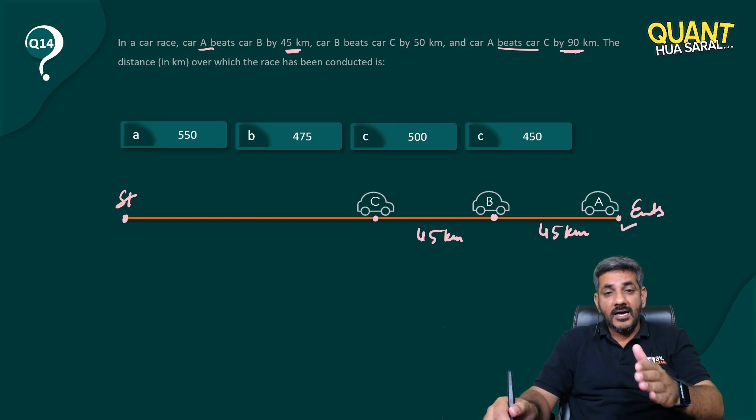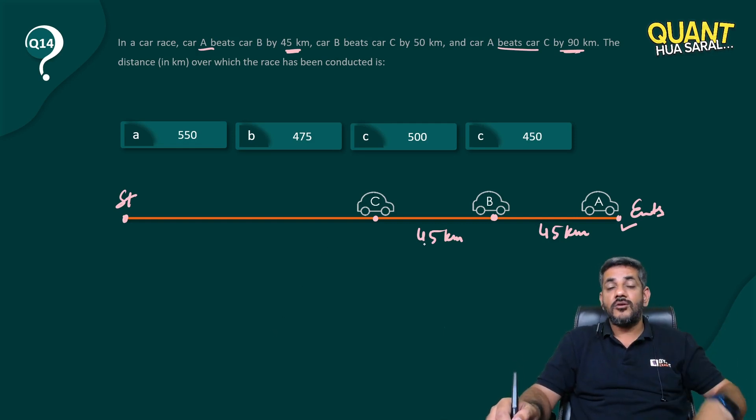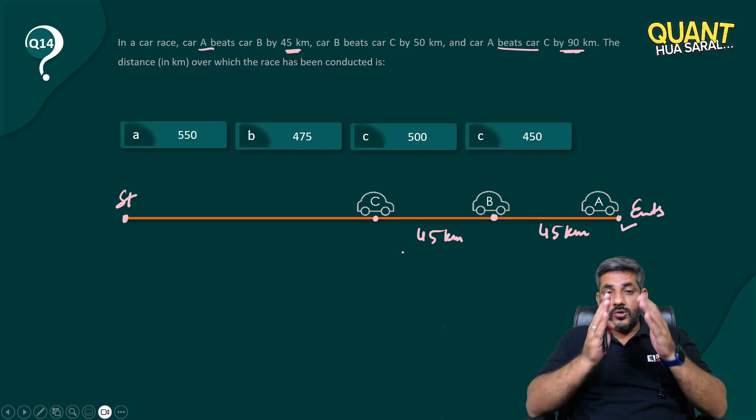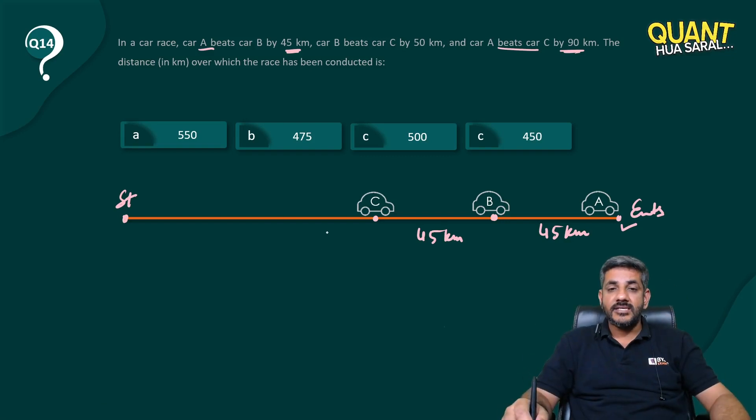So currently the gap between B and C is 45 kilometers, right? What does the question tell you? Question gives you another information that car B beats car C by 50 kilometers.